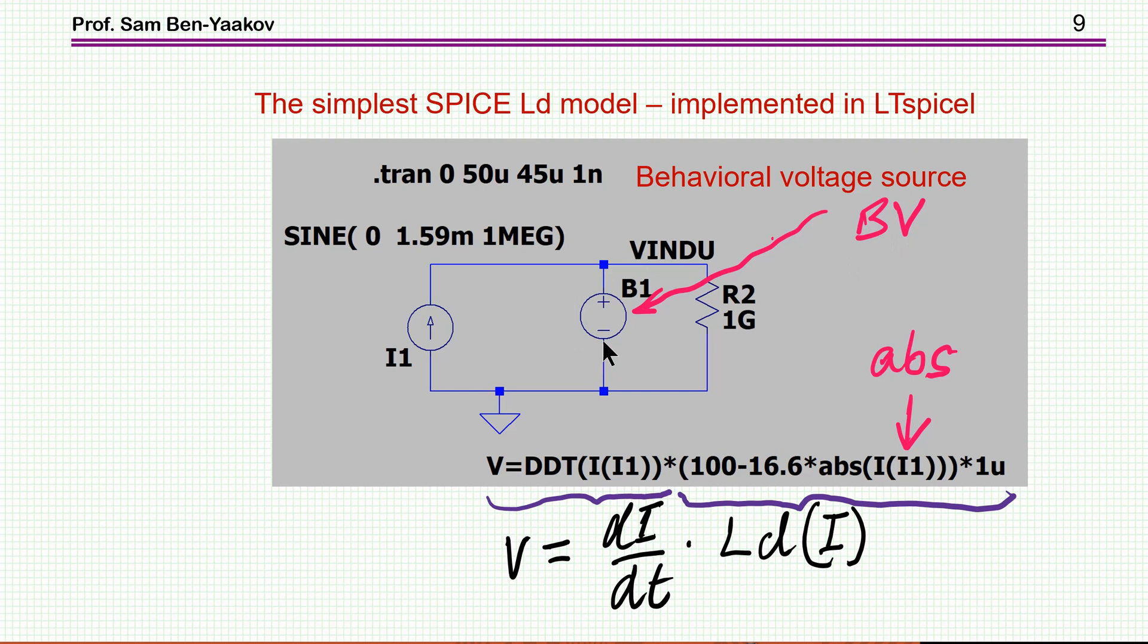And also in most circuit simulators, we do have operators like time derivative. So I can just translate this equation into this behavioral source. V, this is the voltage here, is equal to dI/dt. In this case, I've taken this current, I could have taken this current or put here a voltage source of zero voltage and refer to the current in it. There are many ways to do that. So this is the derivative of the current. And here I have the approximation of this curve for the LD, for the local inductance as a function of the current. This is just translating the state equation into a voltage source. And this works very nicely.